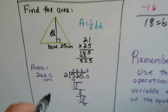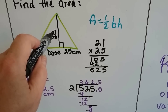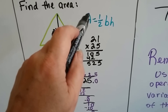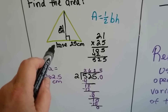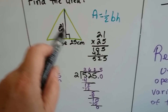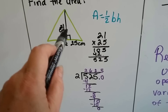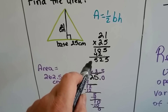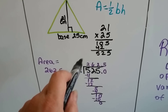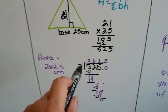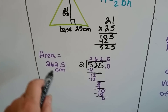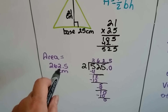If it says find the area for the triangle and we know the height is 21 centimeters and the base is 25, the area equals half the base times the height. So we do 21 times 25 and get 525. The area is half of this, so we divide 525 by 2 and get 262.5. The area is 262.5 centimeters.